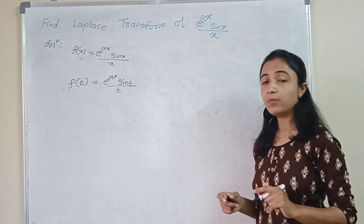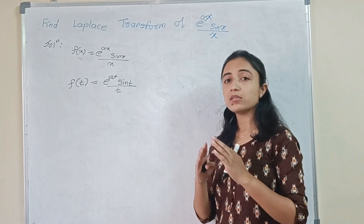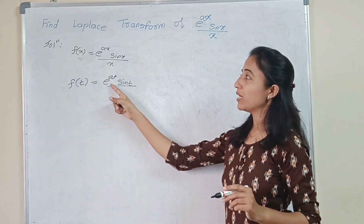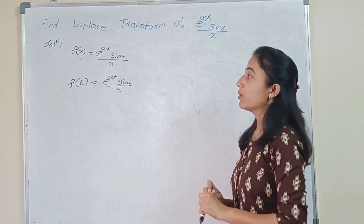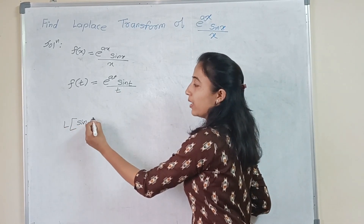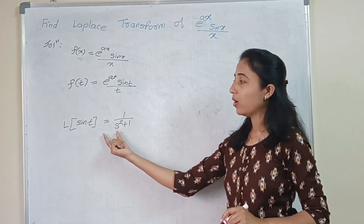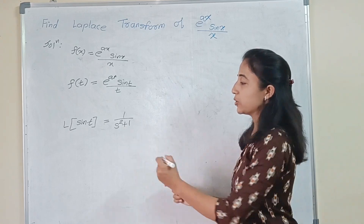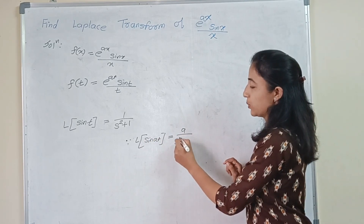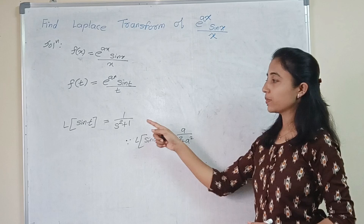Now which property do we use to solve this question? We have to solve this step by step. Here sin t is multiplied by e raised to the power at. When e is in multiplication, we use the shifting property. For that, we first find the Laplace transform of sin t. By the formula for sin at, the Laplace of sin at is a upon s squared plus a squared. Here the coefficient of t is 1, so the answer is 1 upon s squared plus 1.